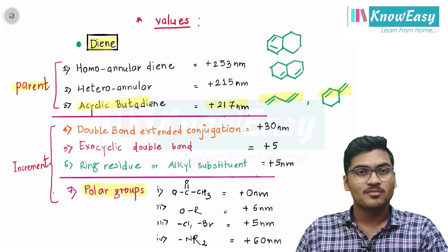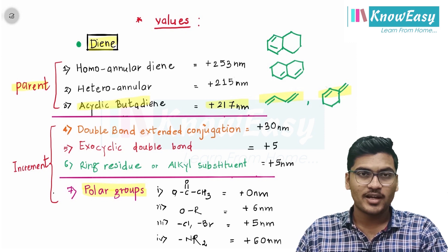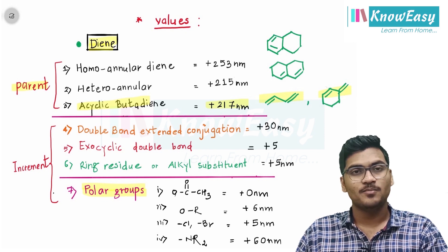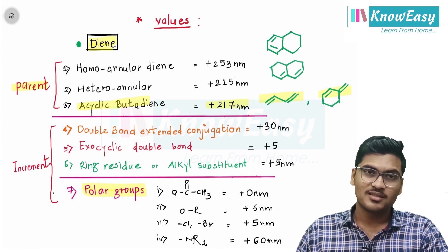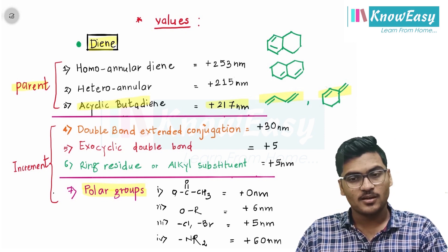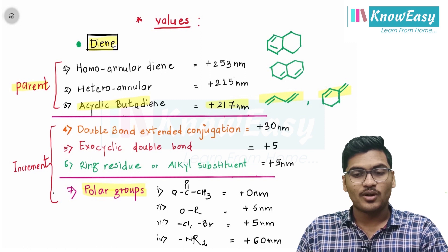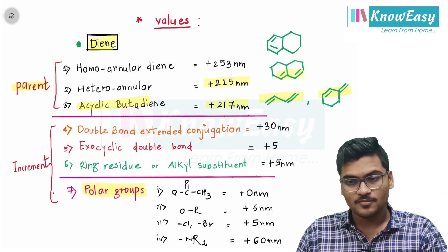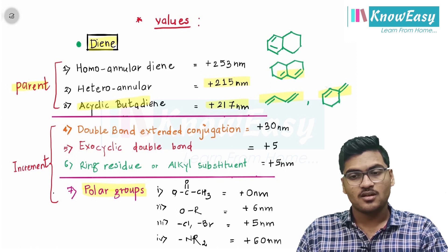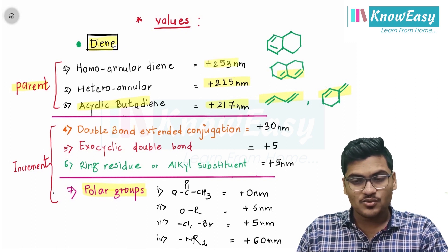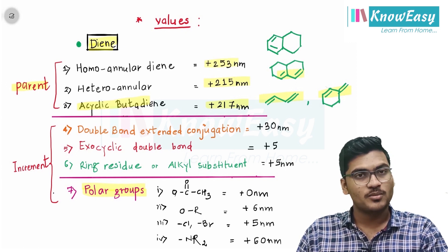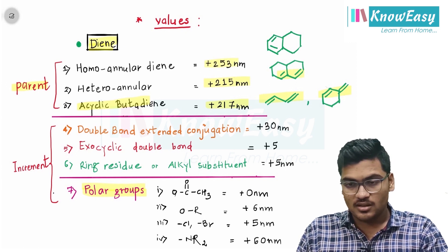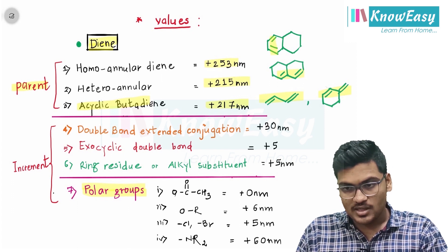Cyclic dienes are of two types: homoannular and heteroannular. Homo means same, hetero means different. For heteroannular, the base value is 215 nanometers. For homoannular, the value is 253 nanometers, meaning both double bonds are in the same ring.